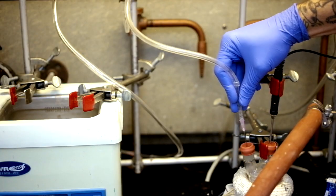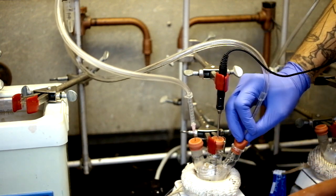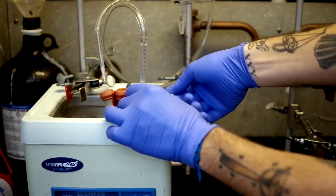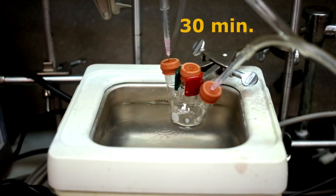After the selenium flask has been degassed for one hour, you can switch to argon and remove it from the heat. You can also remove the temperature probe and place it into the sonicator to dissolve the selenium powder. It should sonicate for about 30 minutes.